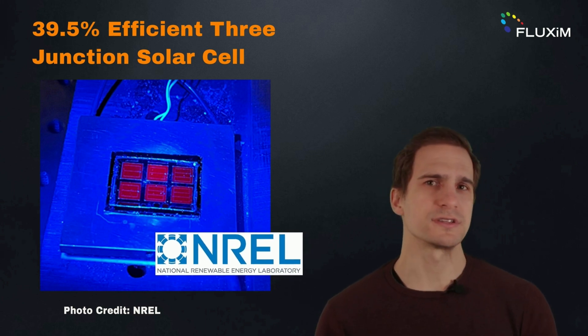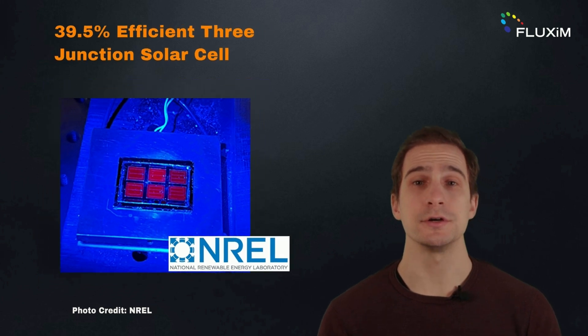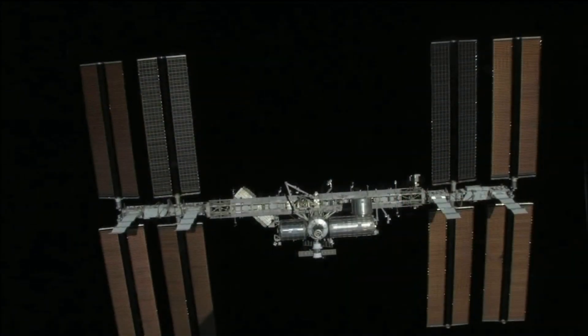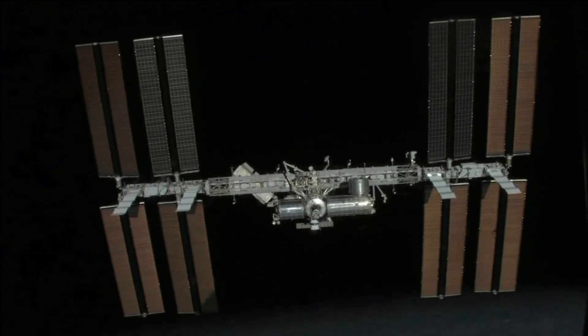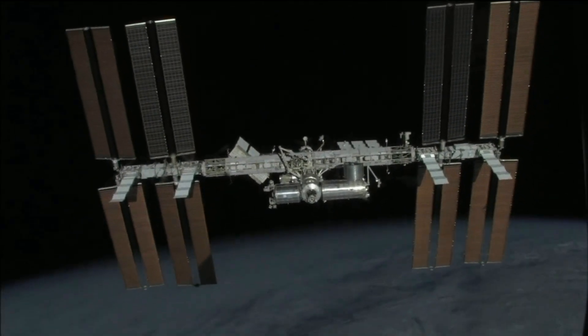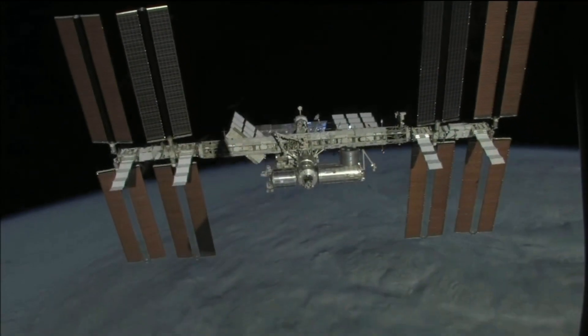Both of these record solar cells have light-absorbing materials constituted by III-V semiconductors. These advanced solar cells are expensive, up to a thousand times more expensive than silicon solar cells. Their use is mostly limited to special applications such as space applications, where cost is less of an issue compared to other aspects such as weight.